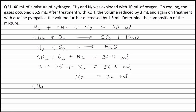CH4 reacts with Oxygen to form CO2 and H2O. Volume of carbon dioxide formed is 3 ml. In gaseous reactions under similar conditions of temperature and pressure, the relative volume represents the relative number of moles. Therefore, applying the principle of atom conservation on carbon atoms, we get 1 into moles of methane equals 1 into moles of carbon dioxide, that is 3. Solving this, we get volume of methane is equal to 3 ml.